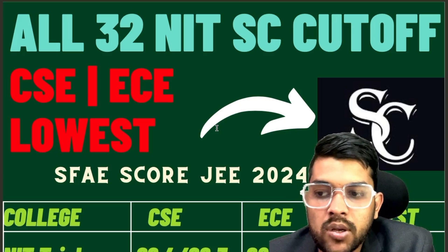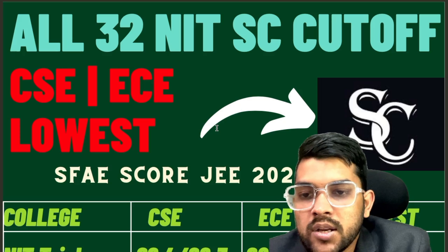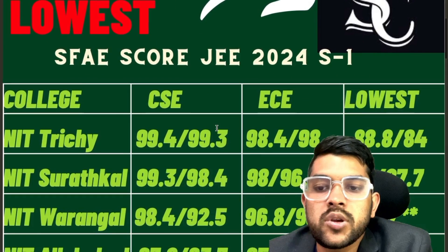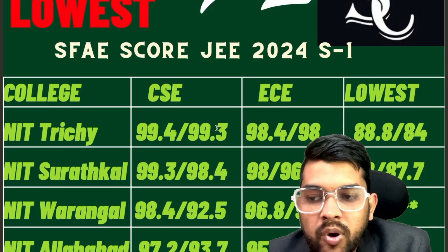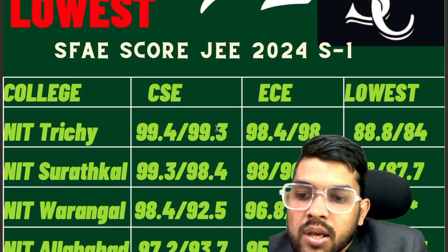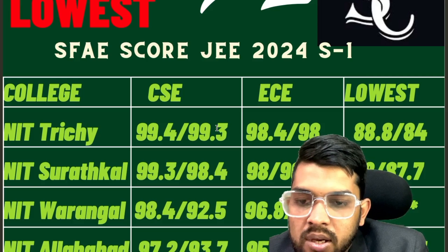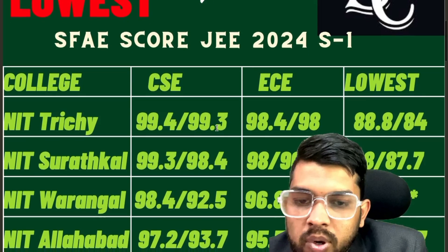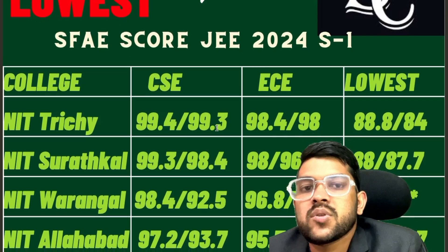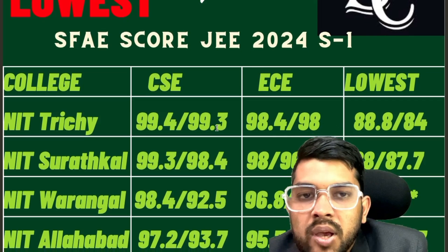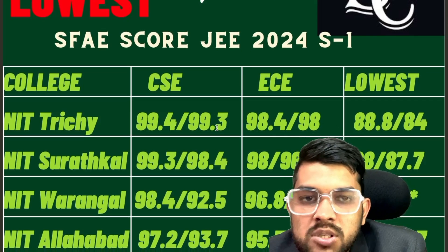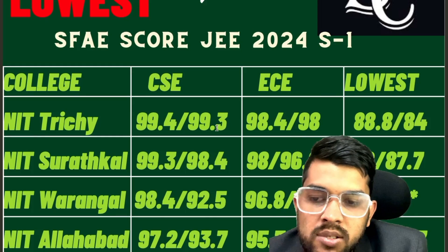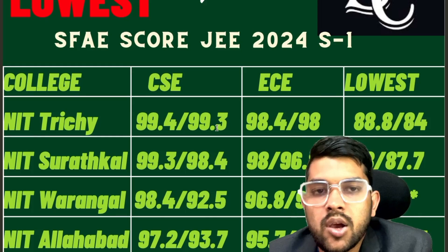This video is totally dedicated to students belonging from the SC category. The data shown covers CSE, EC, and lowest branch cutoffs — 'lowest' means just wanting to enter into that college. For NIT, 99.4/99.3 percentile is required for CSE, 98.4/98 for EC, and 88.8/84 for the lowest branch. After the slash it is for female students, before the slash it is for male students. All data are for other-state students; if you are from the home state of any college, you can get in with a slightly lower percentile.